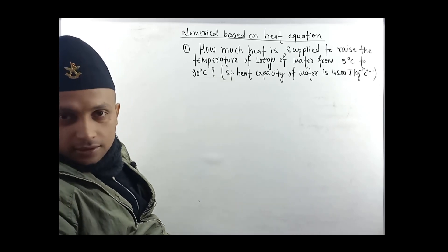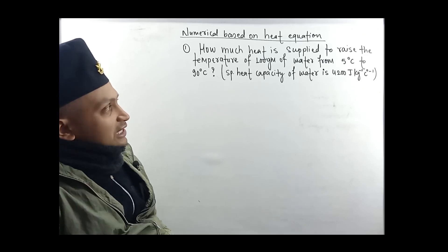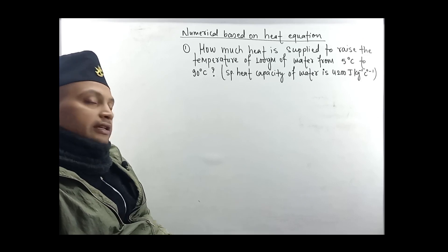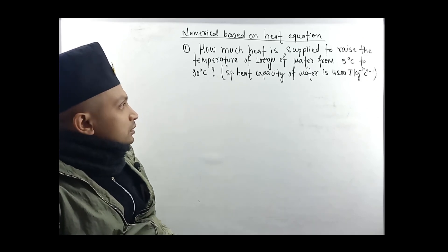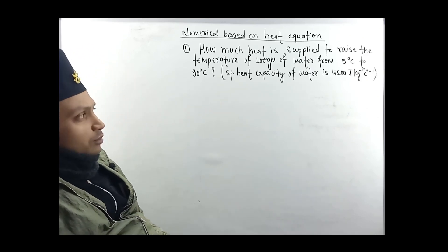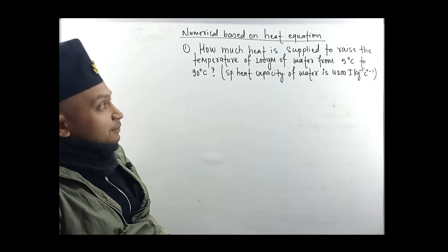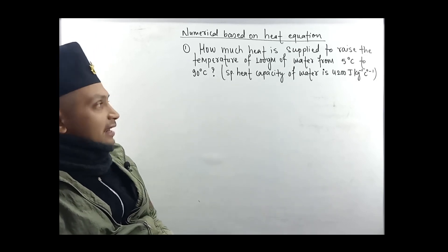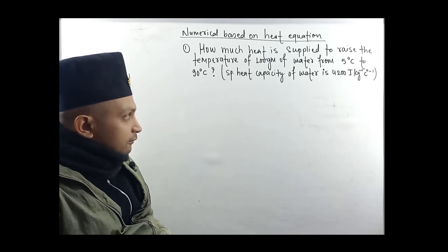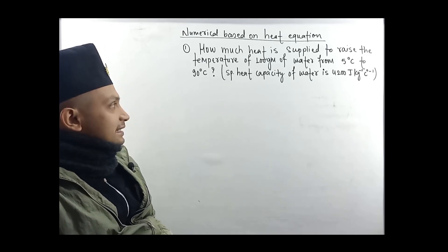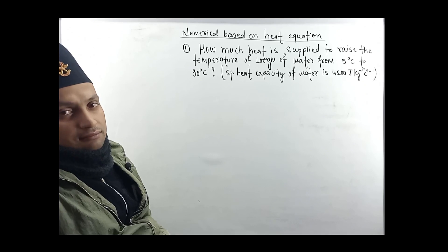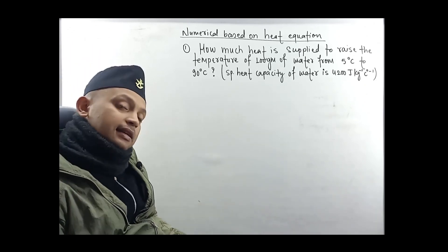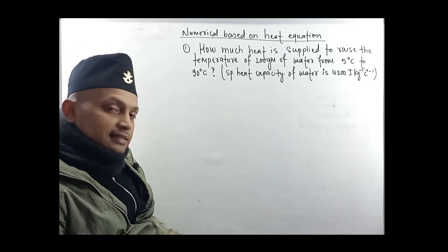The numerical is called: how much heat is supplied? The question is, how much heat is supplied to raise the temperature of 100 gram of water from 5 degree Celsius to 90 degree Celsius. Given: 100 gram water, 5 degree Celsius, 90 degree Celsius.